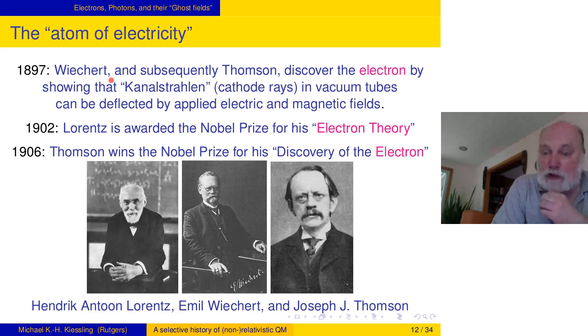Wichert was in Königsberg, like Kirchhoff earlier. He became the first professor of geophysics ever in the world, theoretical geophysics, in Göttingen. So he stopped doing what he was doing, moved to Göttingen, and became a very esteemed seismologist and a forgotten physicist. 1902, then, Henrik Lorenz is awarded the Nobel Prize for his electron theory, nowadays called classical electron theory. He has a theory trying to merge the tiny structure called electron with Maxwell's theory of electromagnetism. Thomson, in 1906, wins the Nobel Prize for the discovery of the electron.